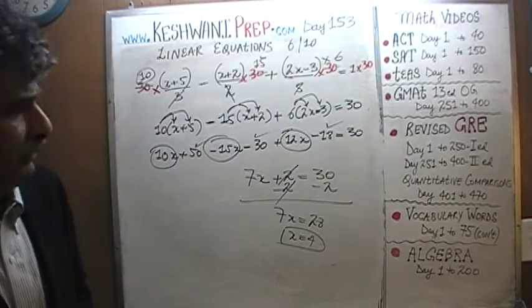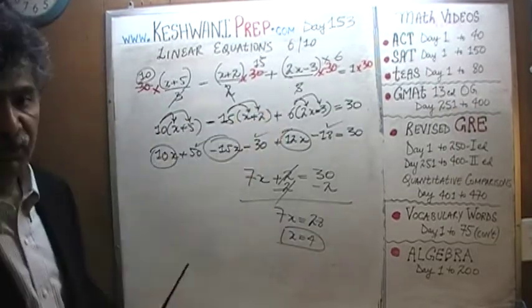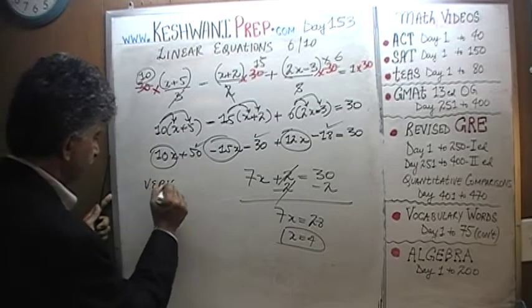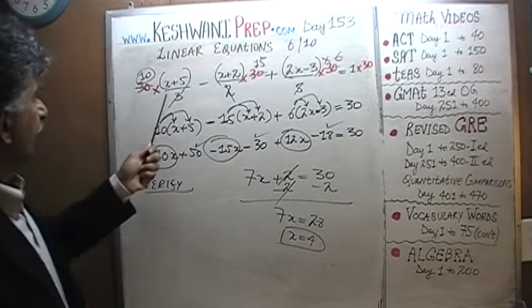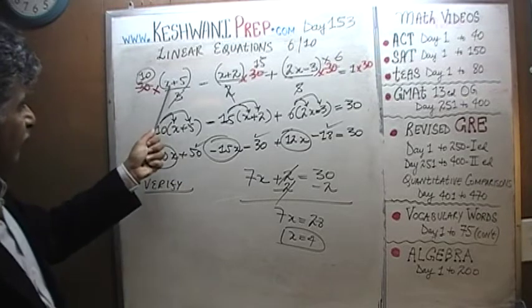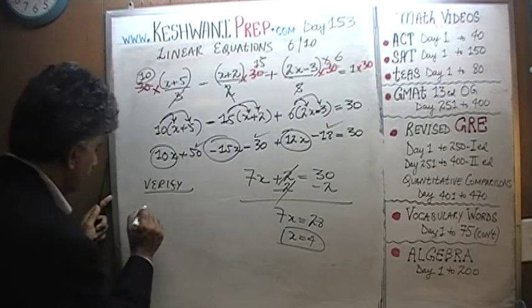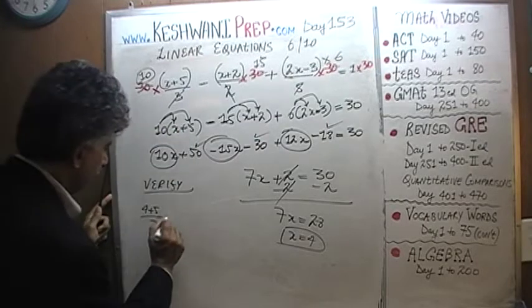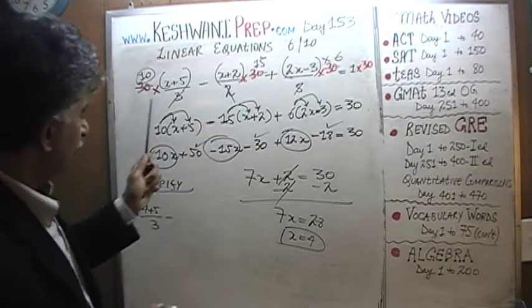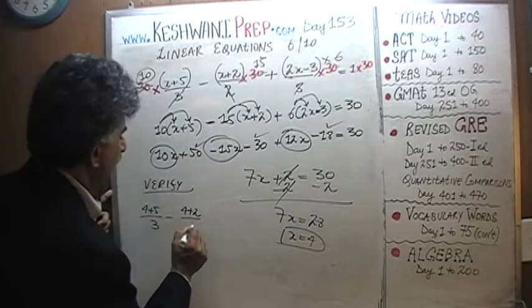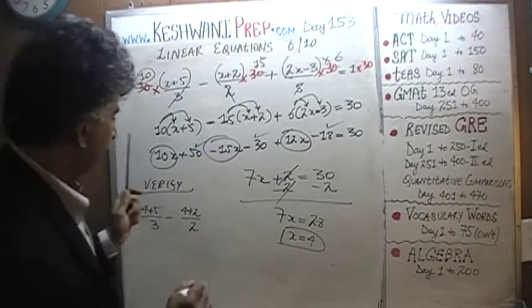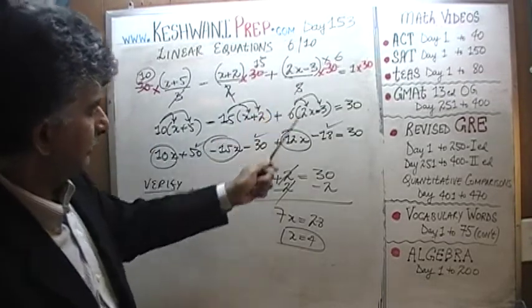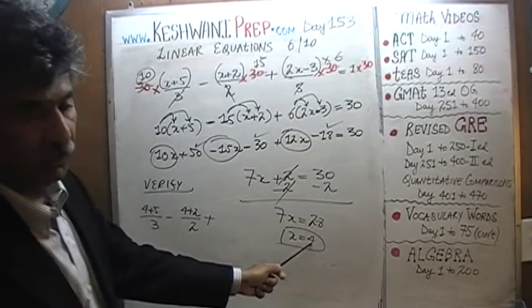What do we do at the end? We have to verify it — we have to put this value back in the original equation. Let's do it right here. x plus 5: x we are claiming to be 4, so 4 plus 5 over 3, minus x plus 2: so 4 plus 2 over 2, plus 2x minus 3: 2 times 4 minus 3.